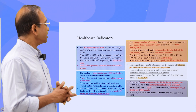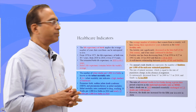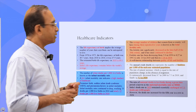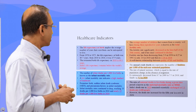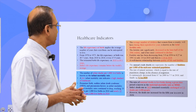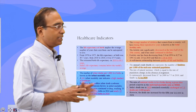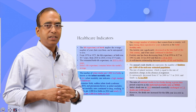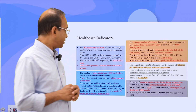Life expectancy at birth is a very crude measure — it is basically trying to understand the probability of a newborn to live, how many years the baby can live. For India in 2014, it was 67.9 years, and in 2018, it is 69.1 years, still slightly lower than the world average.